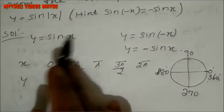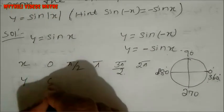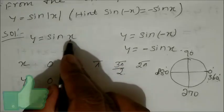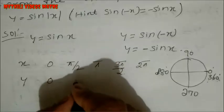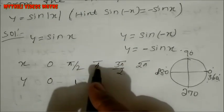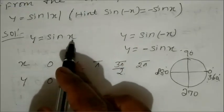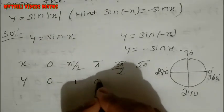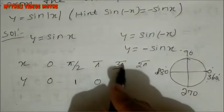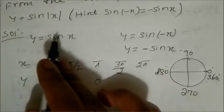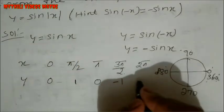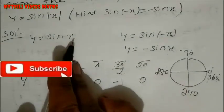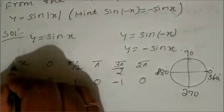From the table: sin 0 is 0. Sin 90 degrees, which is π/2, is 1. Sin 180 degrees, which is π, is 0. Sin 270 degrees, which is 3π/2, is minus 1. Sin 360 degrees, which is 2π, is 0. We use this table to plot the graph.